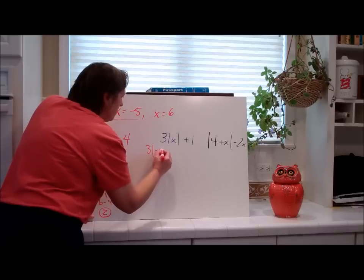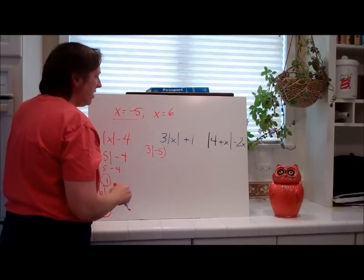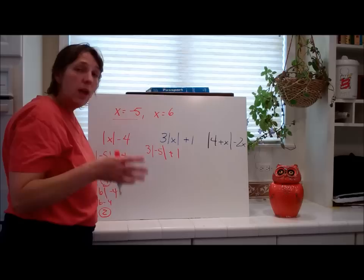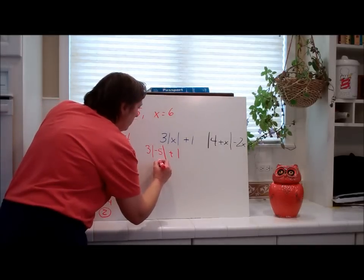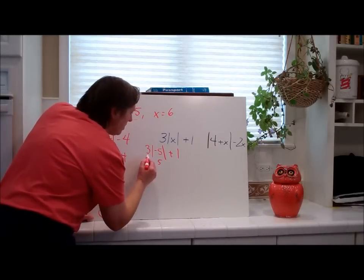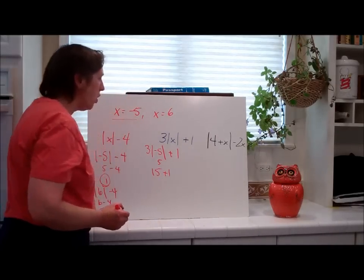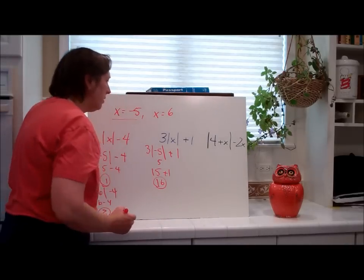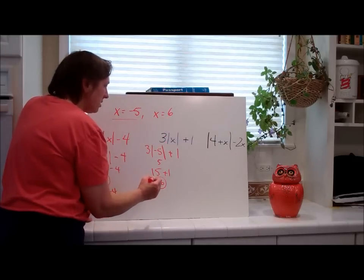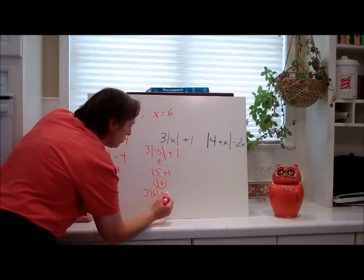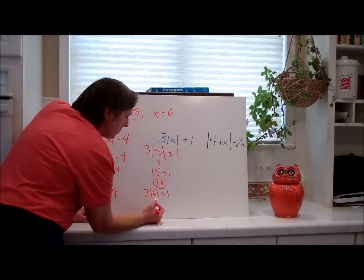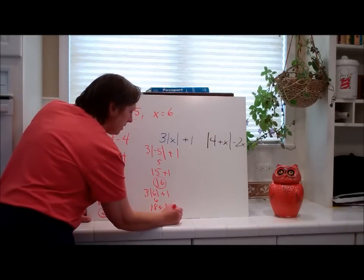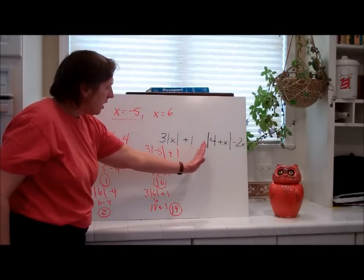For the second expression: 3 times the absolute value of negative 5, because I'm plugging in negative 5 for x, plus 1. I have to evaluate the absolute value of negative 5 first — it's 5. Then 3 times 5 is 15, plus 1 is 16. Then I do it again for x equals 6: 3 times the absolute value of 6 plus 1. The absolute value of 6 is 6. 3 times 6 is 18, plus 1 is 19. I'm circling my answers.